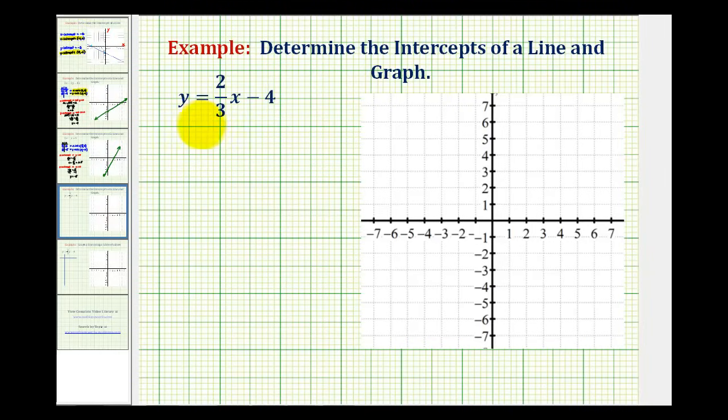We want to determine the x and y intercept of the line y equals two-thirds x minus four. To do this, we can use a table of values.